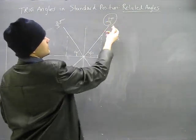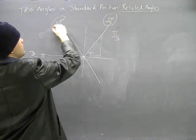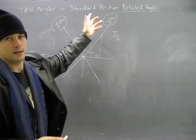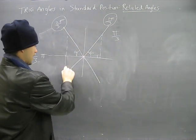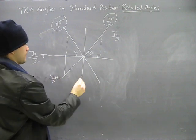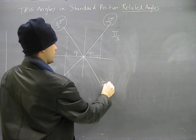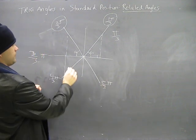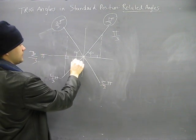What it means is that this measurement and this measurement, these are related angles. And, of course, going down again, four-thirds pi, five-thirds pi.